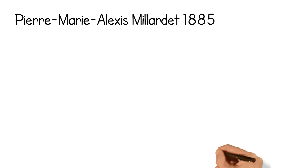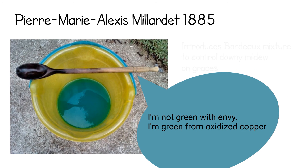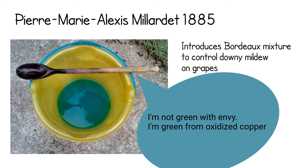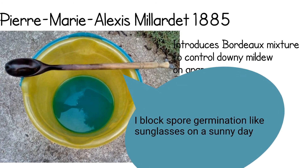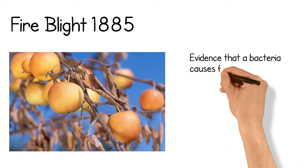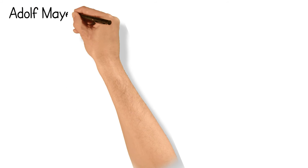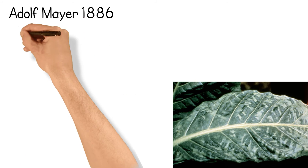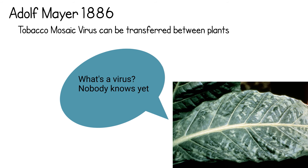Pierre-Marie Alexis Millardet, 1885, introduced the Bordeaux mixture to control downy mildew on grapes. This mixture includes copper sulfate. The copper ions prevent the fungus from germinating, thus preventing an outbreak. Fire Blight, 1885 — first evidence that bacteria causes fire blight on apples. Adolf Mayer, 1886, found that tobacco mosaic virus, a disease transferred between plants, is similar to bacteria.